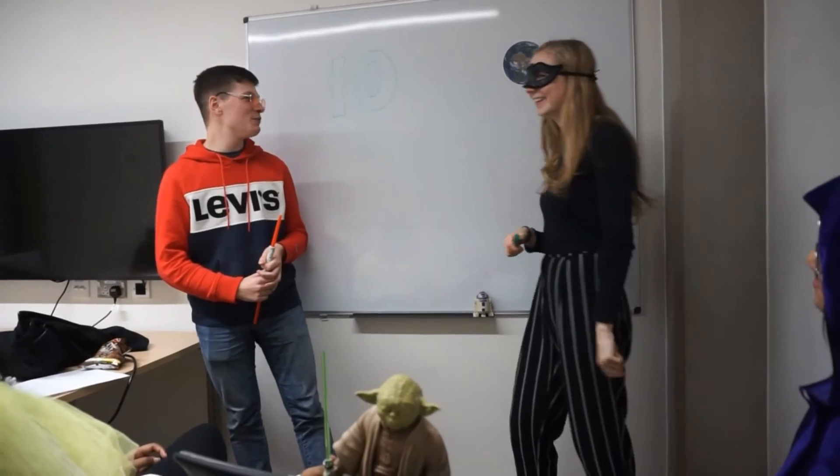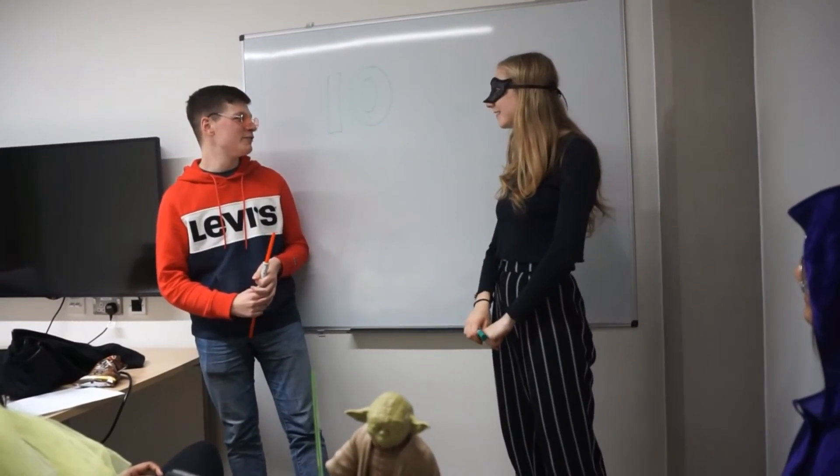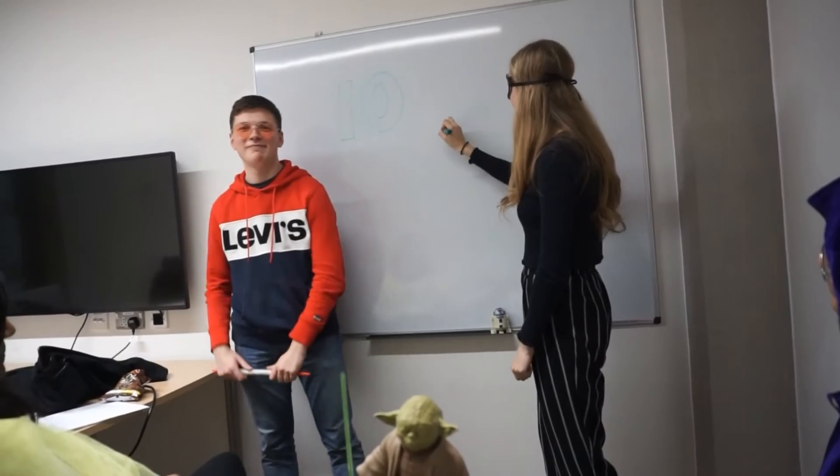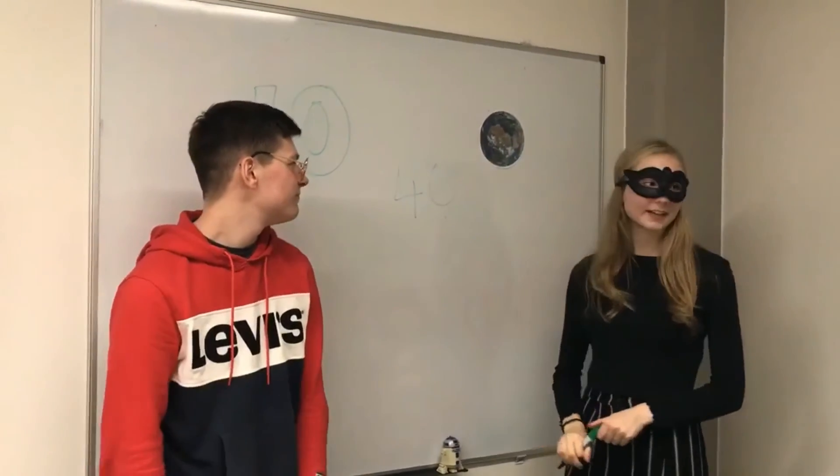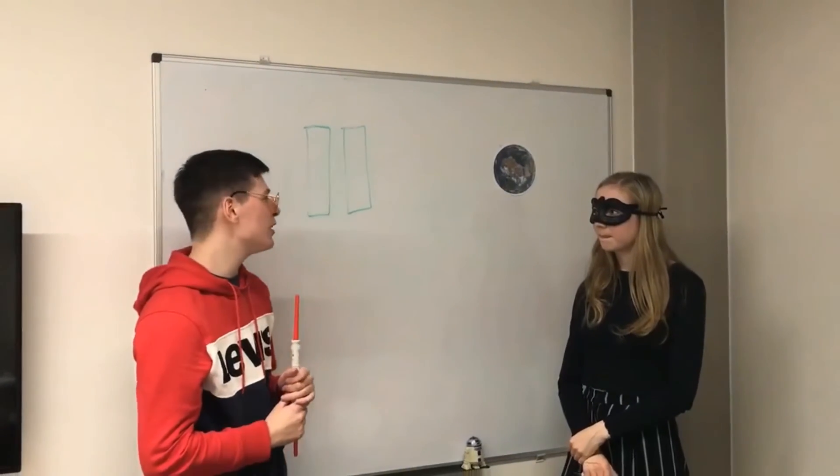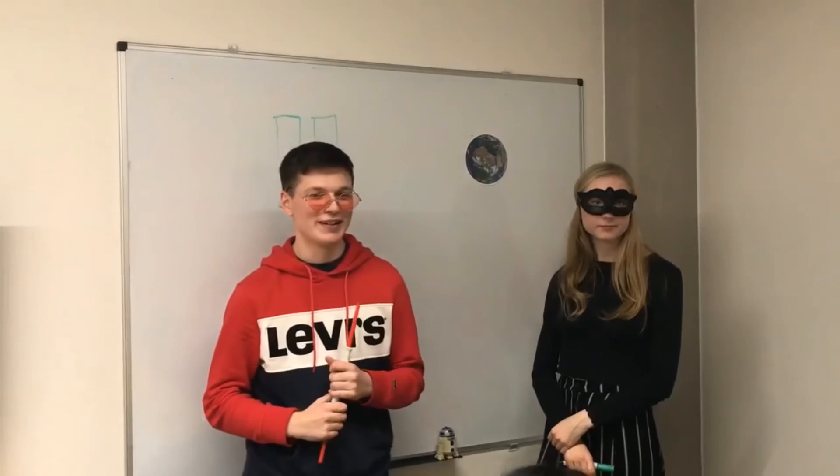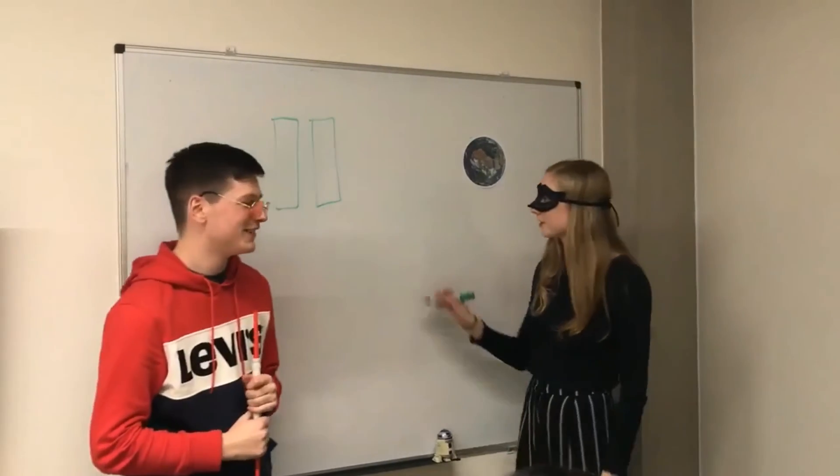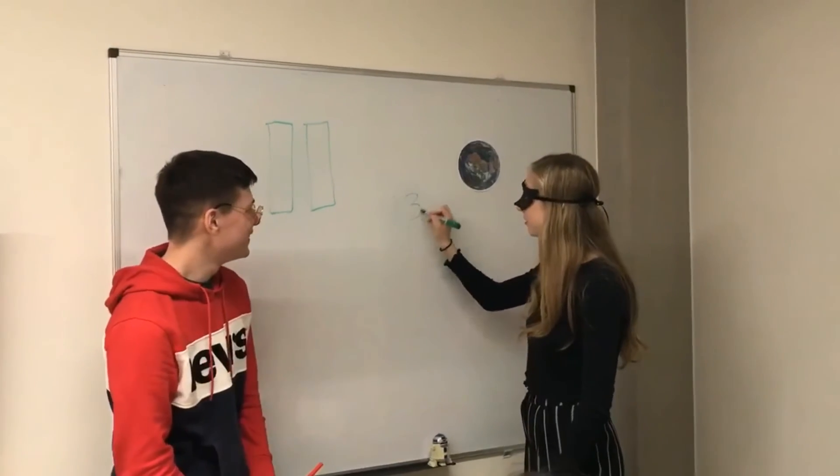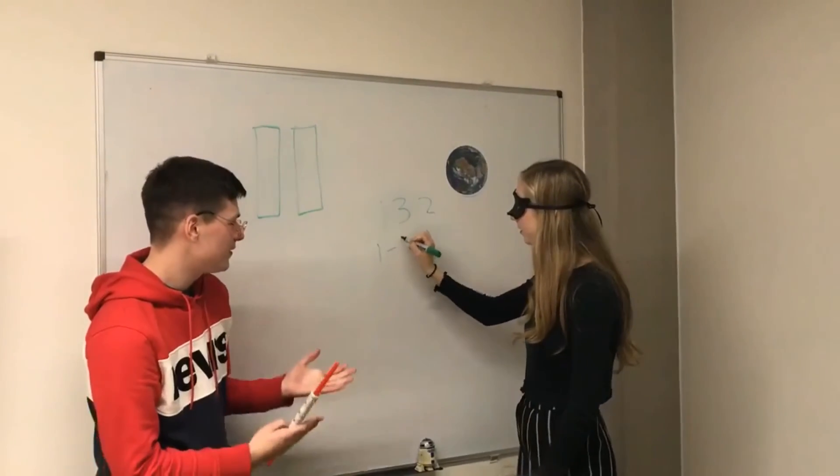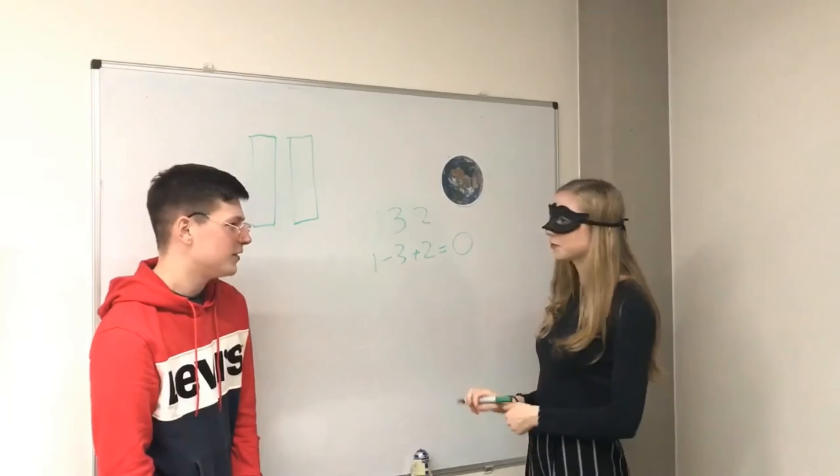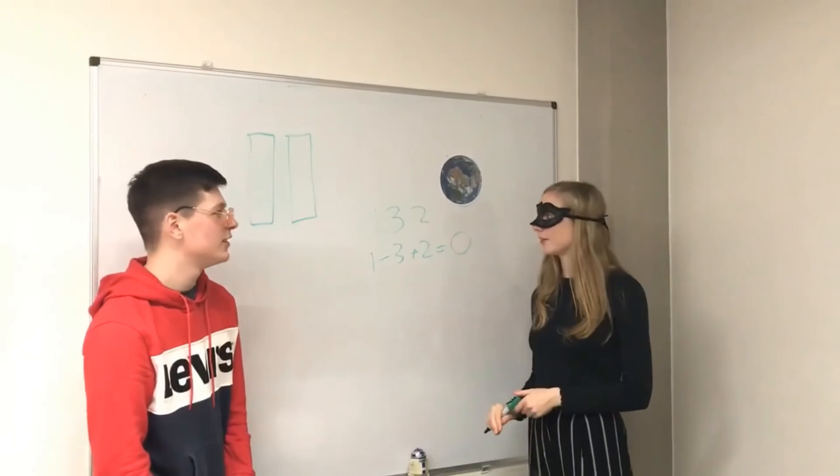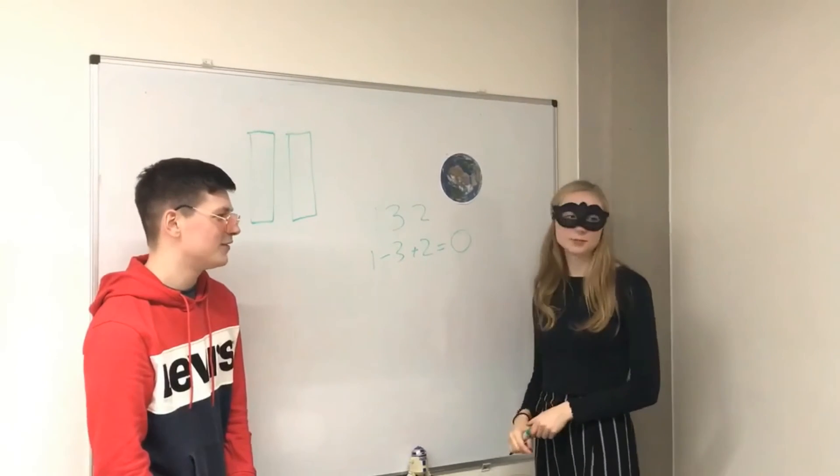A number is divisible by 10 if the last digit is 0. For example, 14 ends in 0 so it's divisible by 10. A number is divisible by 11 if the sum of the alternating digits is also divisible by 11. For example, 132: 1 minus 3 plus 2 equals 0. And 0 is divisible by any number so it's divisible by 11, which means that 132 is divisible by 11.